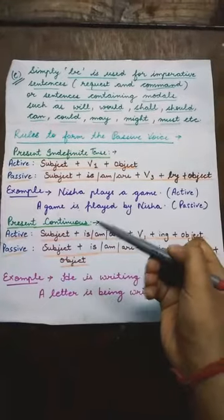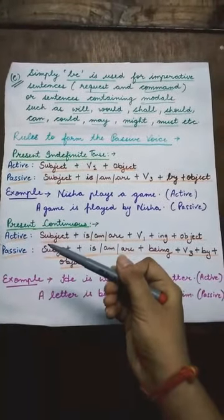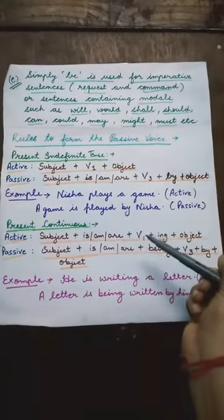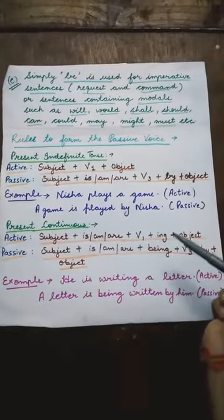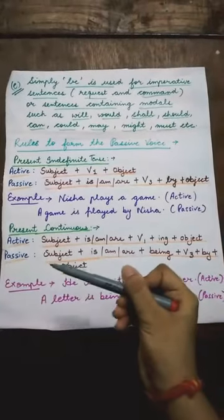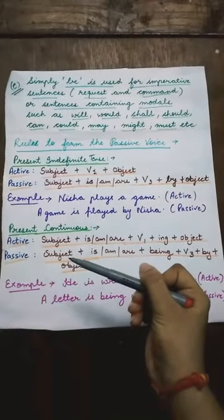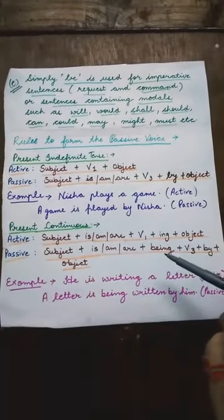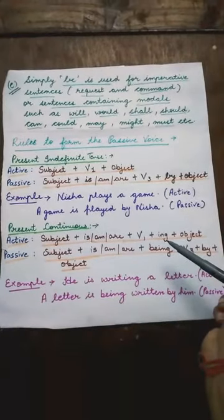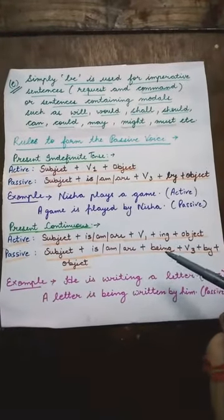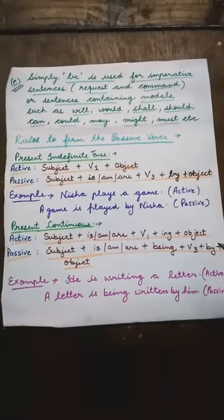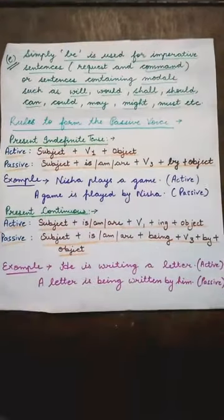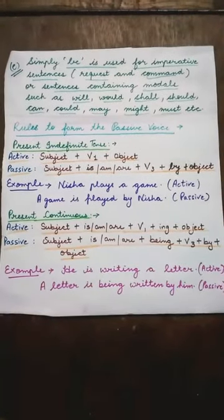Next tense is present continuous tense. Active sentence का rule होता है: subject + is/am/are + first form of verb + ing + object. But जब sentence को passive में लिखा जाता है, तो sentence structure होता है: subject + is/am/are + being + third form of verb + by + object. Ing को remove कर दिया जाता है first form of verb से, उसकी place पर 'being' लिखते हैं. To understand this, let's read one example.